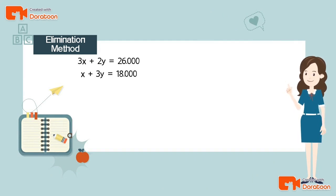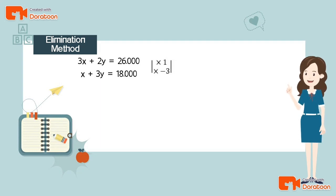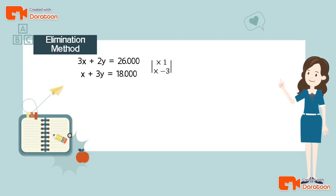We can cancel either x or y. Since x has a smaller coefficient, let's eliminate x. We need to adjust the two equations so that when added, the x variables cancel. So we multiply the first equation by 1 and the second equation by negative 3 to get negative 3x.